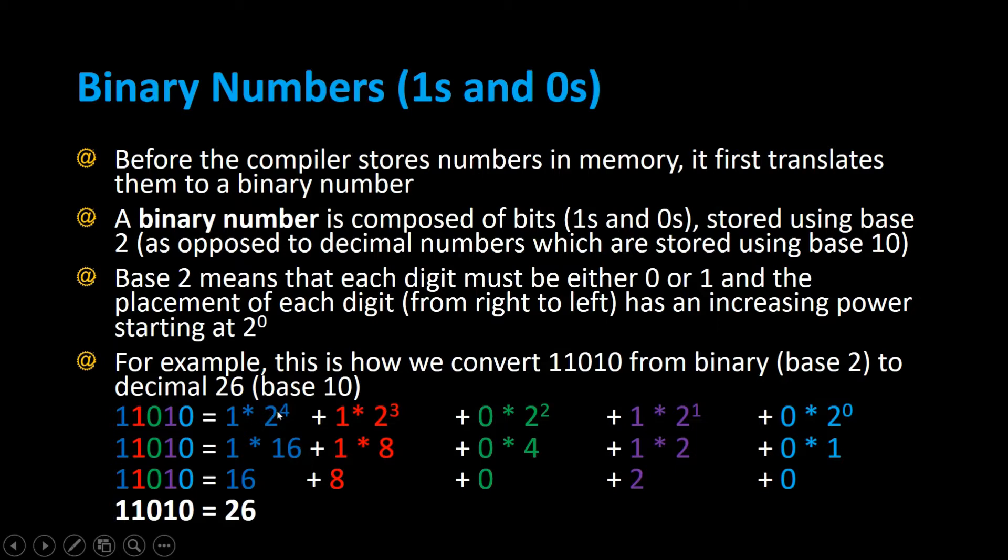And the first number, 1 times 2 to the fourth power. So the powers are increasing from right to left, and every number is that number that we're grabbing from this original binary number according to the color code.